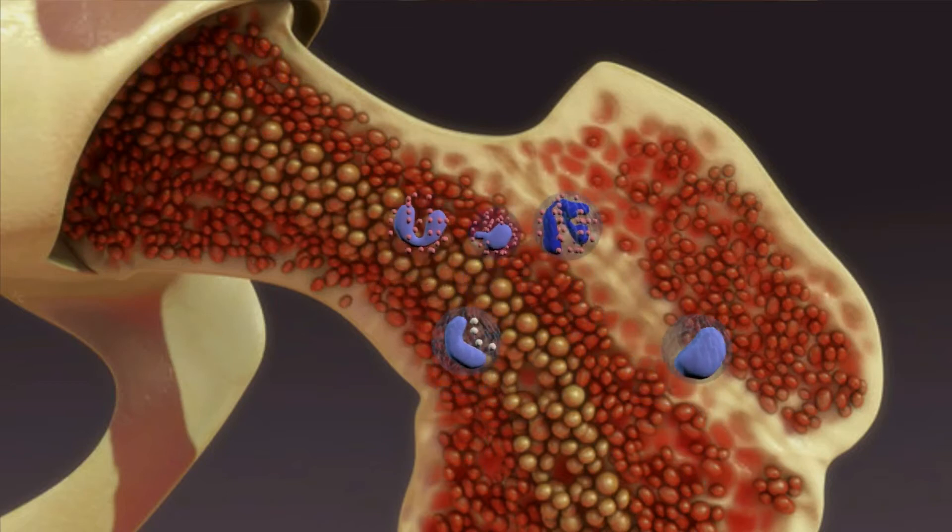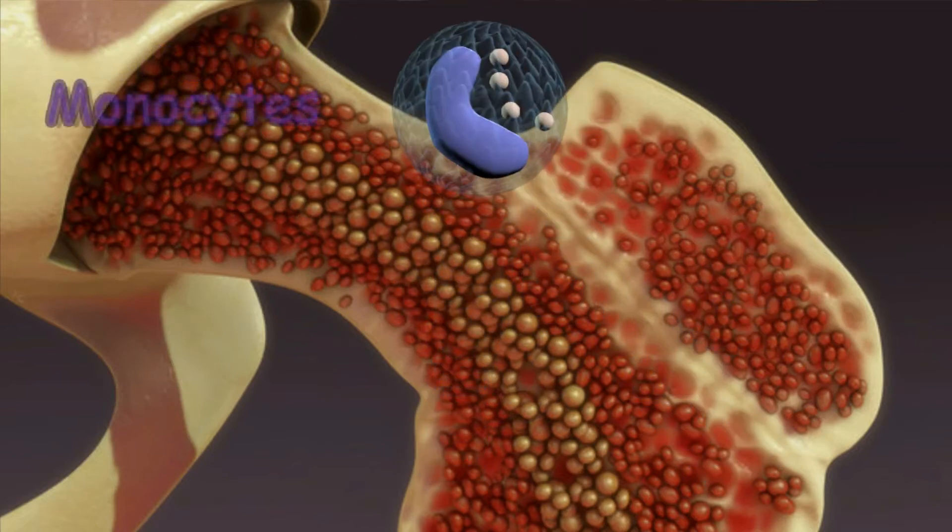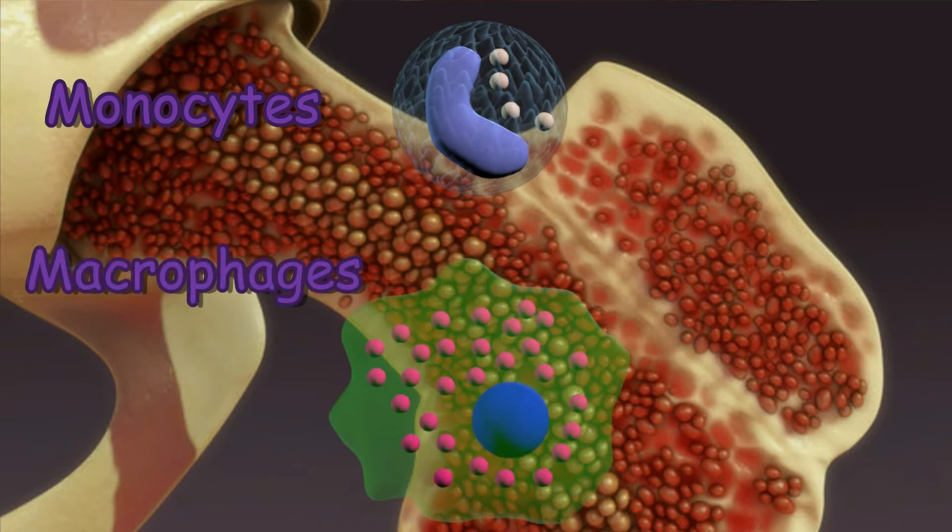Monocytes have a longer lifespan than many white blood cells and help to break down bacteria. These cells migrate from the bloodstream into connective tissue every three days, where they transform into large cells called macrophages.